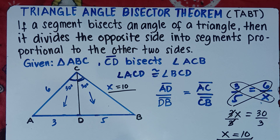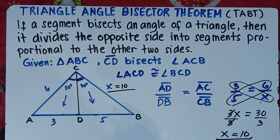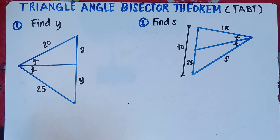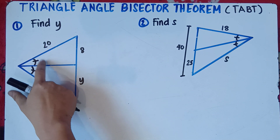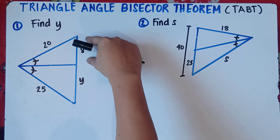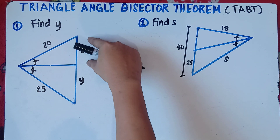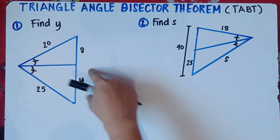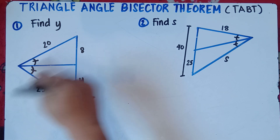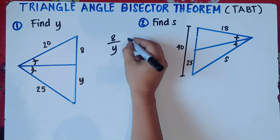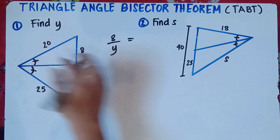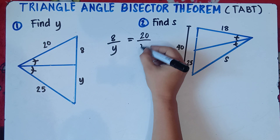Let's give more examples for you to really understand the Triangle Angle Bisector Theorem. Example number 1, we're told to find Y. This angle is congruent to this angle, so the ratio of the opposite side — 8 over Y — is equal to 20 over 25.